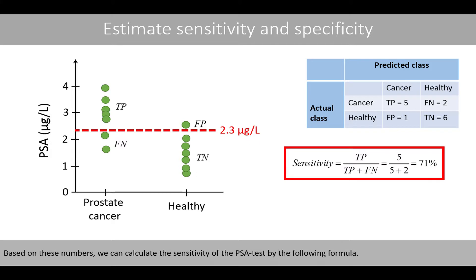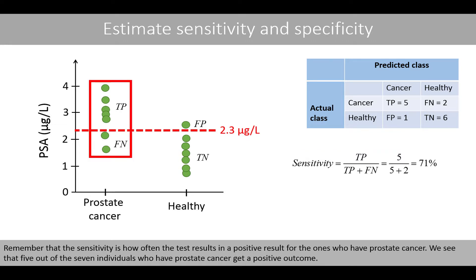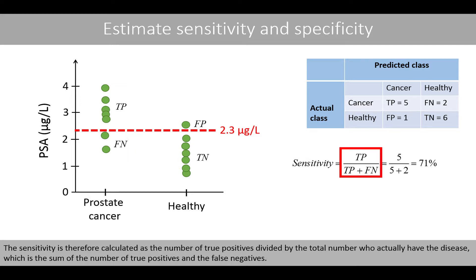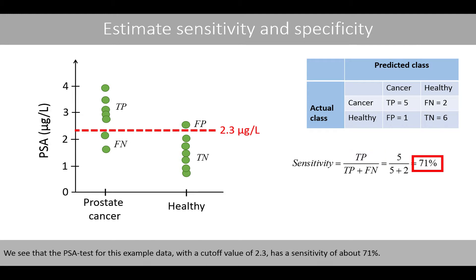Based on these numbers, we can calculate the sensitivity of the PSA test. Remember that the sensitivity is how often the test results in a positive result for the ones who have prostate cancer. We see that five out of the seven individuals who have prostate cancer get a positive outcome. The sensitivity is therefore calculated as the number of true positives divided by the total number who actually have the disease, which is the sum of the true positives and the false negatives. The PSA test for this example data with a cutoff value of 2.3 has a sensitivity of about 71%.